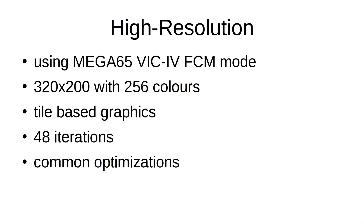For the hi-res version, I used MEGA65's WIC4 full-color text mode at 320x200 with 8 bits of color. The FCM mode is a tile-based graphics mode using 16-bit characters, which are really just pointers into memory. As Matt used 48 iterations in his X16 version, I decided to do the same, and I even used the same color palette. For the Mandelbrot iteration, I implemented the most common optimizations, which is the reduction of the needed multiplications.